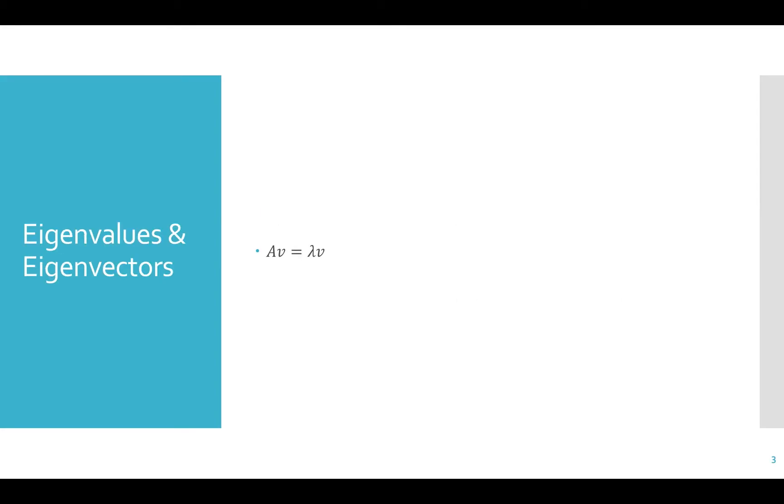First, let's review eigenvalues and eigenvectors, as they're essential for PCA. Remember that an eigenvector and an eigenvalue correspond to a matrix. They don't just exist on their own. A matrix has eigenvalues and eigenvectors, and a vector V is an eigenvector of a matrix A if A times V is equal to a scalar times V. That scalar is called an eigenvalue and it's represented by lambda.